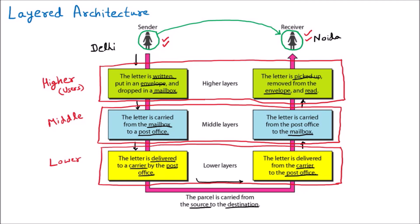The lower layer is where data passes through the transmission medium, which can be wired or wireless — that is the network. Layers that help with the network connectivity are the lower layers, and layers interacting between the higher and lower layers are the middle layers. With layered architecture, the complex task of sending data from one place to another becomes much easier.